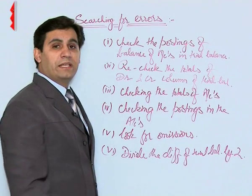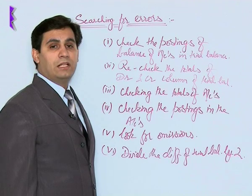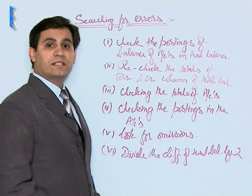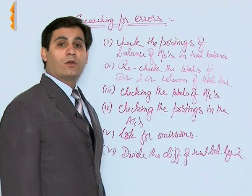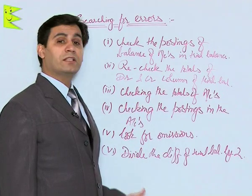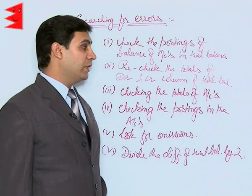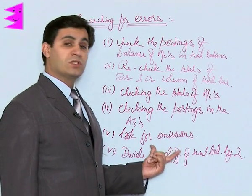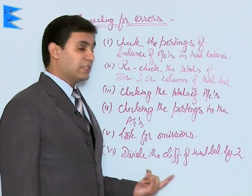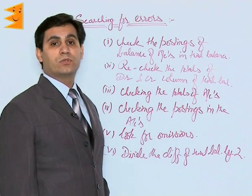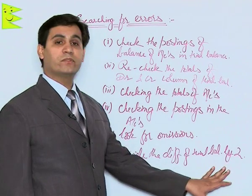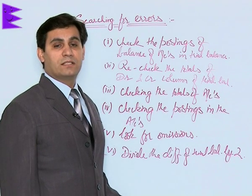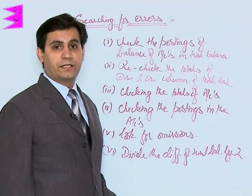Once all these steps have been followed, the errors would be located and the trial balance would match after rectification. To summarize: first, check whether all account balances have been posted correctly in the trial balance; then check whether the totals of the trial balance are correct; if still not matching, check the totals of individual accounts and their respective postings; look for any omissions; and finally, check whether a debit balance account has been posted as a credit balance, which can be verified by dividing the difference of the trial balance by two.